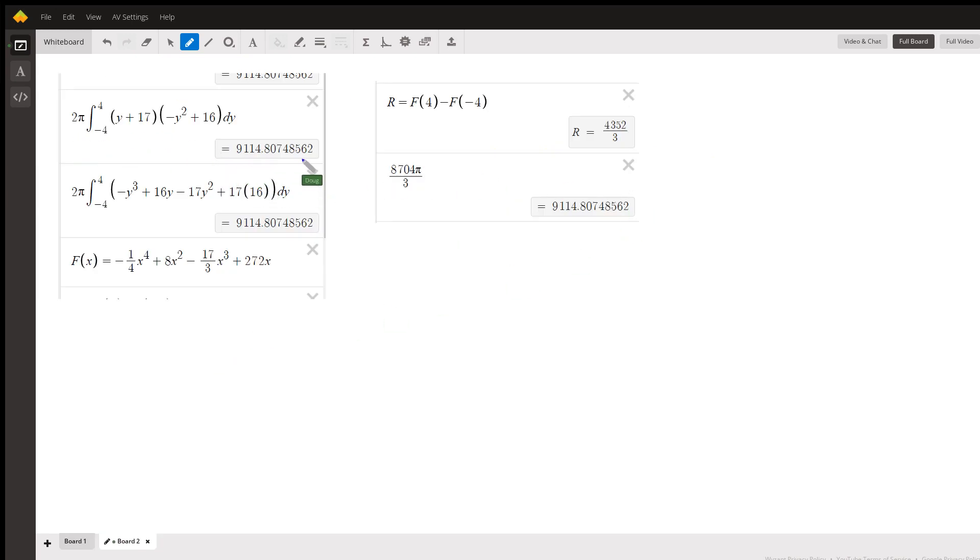Looks like this is a decimal approximation for the volume. Here's what happens if you multiply the two binomials together. Here's an antiderivative for this part.